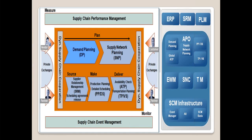The training covers demand planning and supply network planning. If you take 100 projects, almost 70-80% have demand planning and SNP. PPDS accounts for about 10%, Global ATP (ZATP) about 10%, and TPVS about 5%. For job requirements, 80% of jobs posted are for DP and SNP.